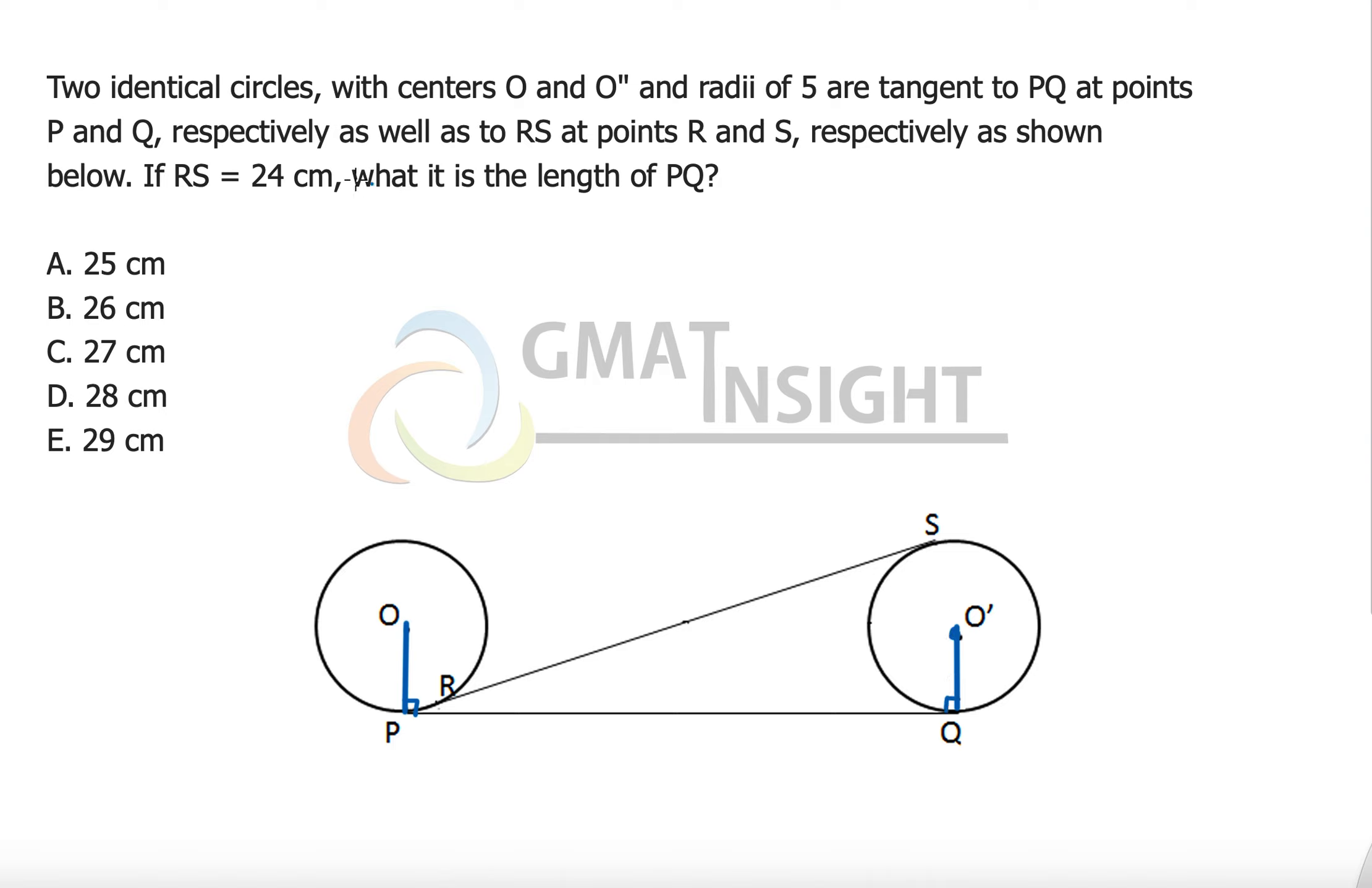Now let's read the question further. Respectively as well as at RS and RS is also a tangent. Okay, so now we have one more tangent coming up here. So let's quickly join the line to the center. So once again this is point R and from this point we have this point S.